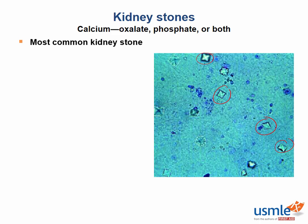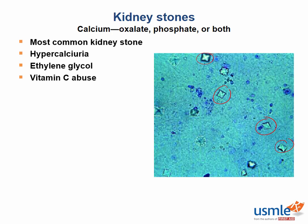Calcium oxalate stones frequently occur in conditions associated with hypercalciuria. Ingestion of ethylene glycol also leads to calcium oxalate formation, because ethylene glycol is metabolized to oxalic acid. Excessive amounts of vitamin C cause increased urinary excretion of oxalate, leading to calcium oxalate stone formation.